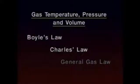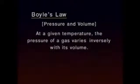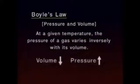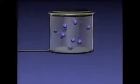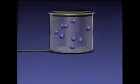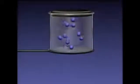The ways in which gas temperature, pressure, and volume relate to each other have been formulated into three laws: Boyle's Law, Charles's Law, and the General Gas Law. Boyle's Law deals with the relationship between the pressure and volume of a gas. It states that at a given temperature, the pressure of a gas varies inversely with its volume — so if the volume decreases, pressure increases, and if volume increases, pressure decreases. We'll use this gas-filled container to illustrate Boyle's Law, assuming the temperature of the gas doesn't change. The pressure in the container is related to the number of collisions between the gas molecules and the walls.